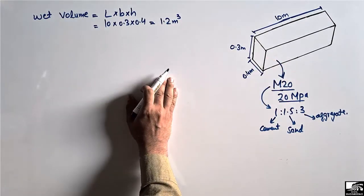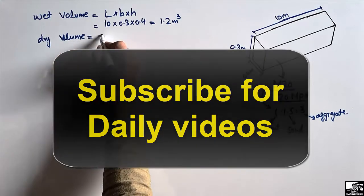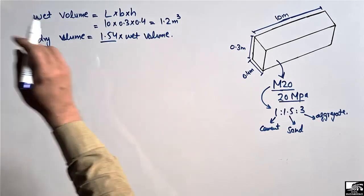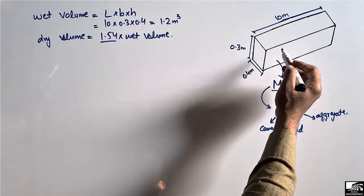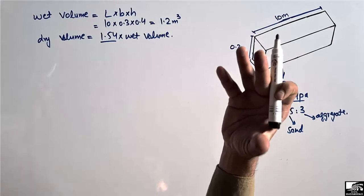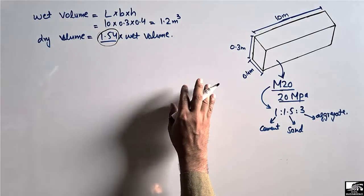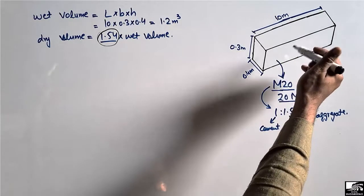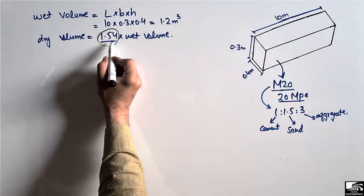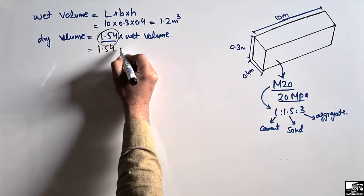Now to find the dry volume, we multiply the wet volume by 1.54. The reason we multiply by this factor is that in the RCC beam, water is already mixed into the concrete, so the wet volume is smaller. The dry volume has no water, so it is always greater than the wet volume — water causes the volume to squeeze and decrease.